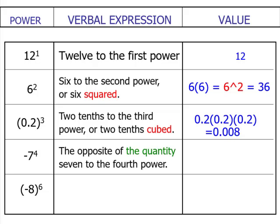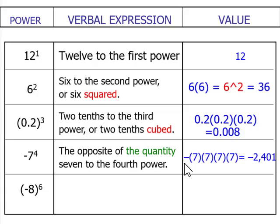Now, in this case, I read it as the opposite of 7 to the fourth power. In certain texts, you may even see 'the opposite of the quantity 7 to the fourth power.' As long as you say 'the opposite of 7 to the fourth power,' you are correct. That negative will stay outside — we find what 7 to the fourth power is and then write the opposite of that. In this case, it would be negative 2,401.